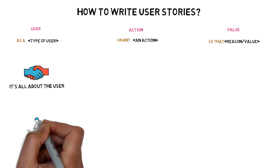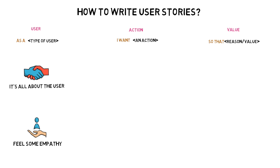Feel some empathy. Give your user a name. Think of their habits — what issue your app is going to resolve for them, and how you're going to make this path easier and faster. Once you have a few groups of end users, the next step is to define what functionality each user expects and how they're going to use the product. A basic rule when writing an action for a user story is to have one action per story. For example, if you want to write: as a customer, I want to browse items and then add them to the cart — it is better to split it into two different user stories.